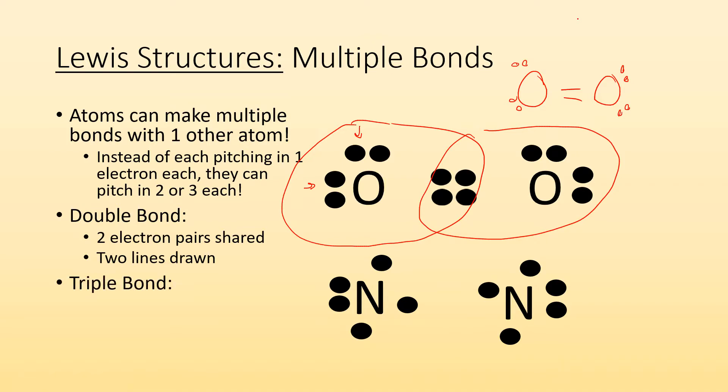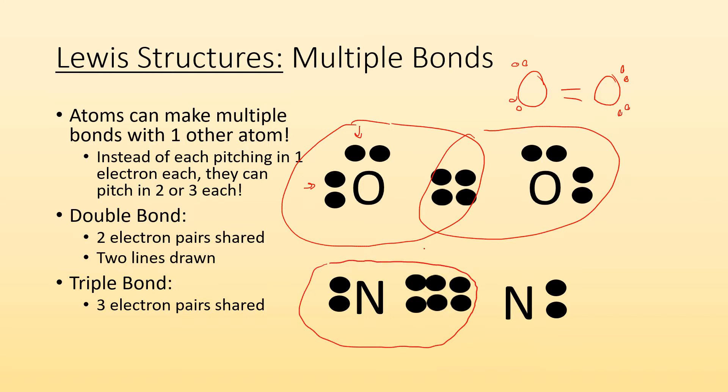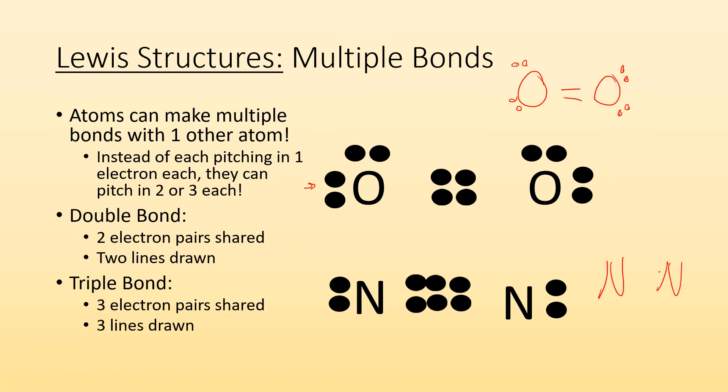For triple bonds, it's the same idea, but instead this time it's three electron pairs being shared. So nitrogen, when it bonds with another nitrogen, is donating, well, they're each sharing three electrons with the other one. So now they each think they have eight. This nitrogen's like, sweet, I got my octet. This nitrogen thinks it's in the same boat. They got their octet. And for this one, you're going to draw three lines. So you go nitrogen, nitrogen, triple bond means three lines. And then they each keep two electrons to themselves.